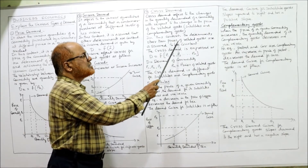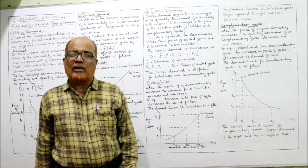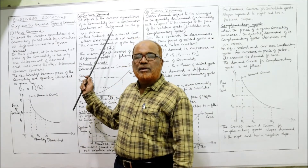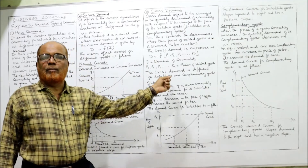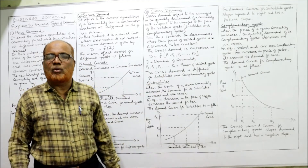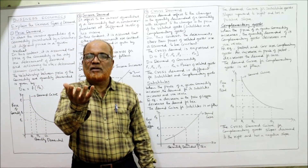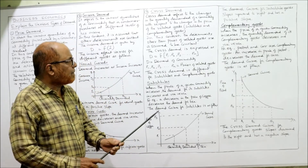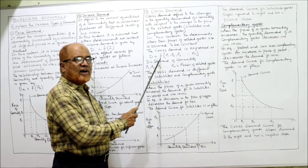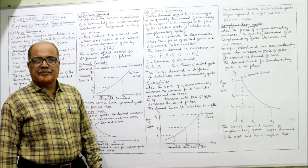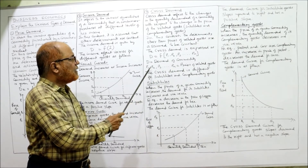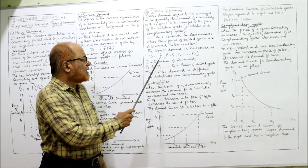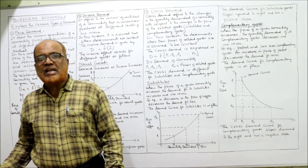In cross demand, other determinants are assumed constant — only the price of related goods affects demand. The cross demand function is expressed as: D = f(P1, P2, P3... PN), where D is the demand for the commodity and P1 through PN are the prices of related goods. Cross demand differs for substitute and complementary goods, just as income demand differs for normal and inferior goods.